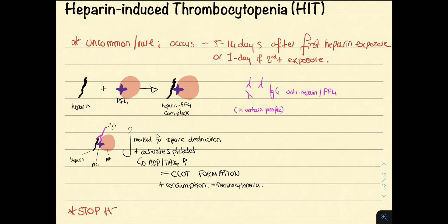Treatment involves stopping heparin and starting an anticoagulant, such as dabigatran, which is a direct thrombin inhibitor, but more on that later.